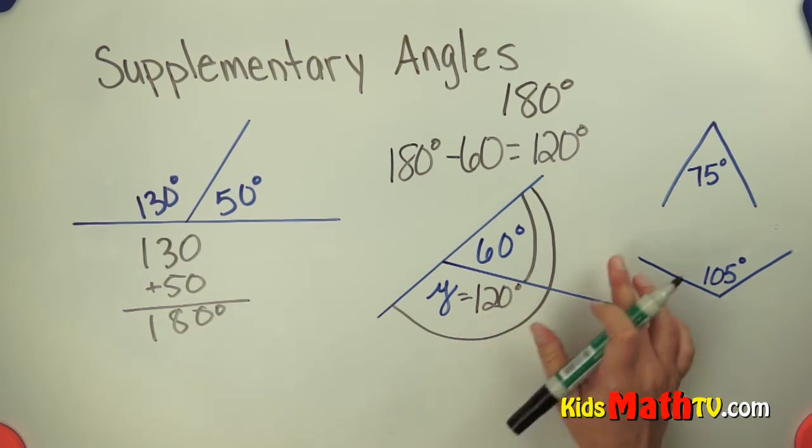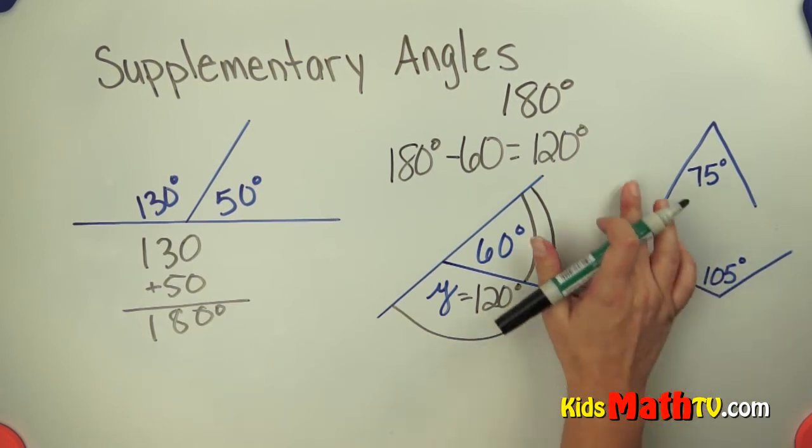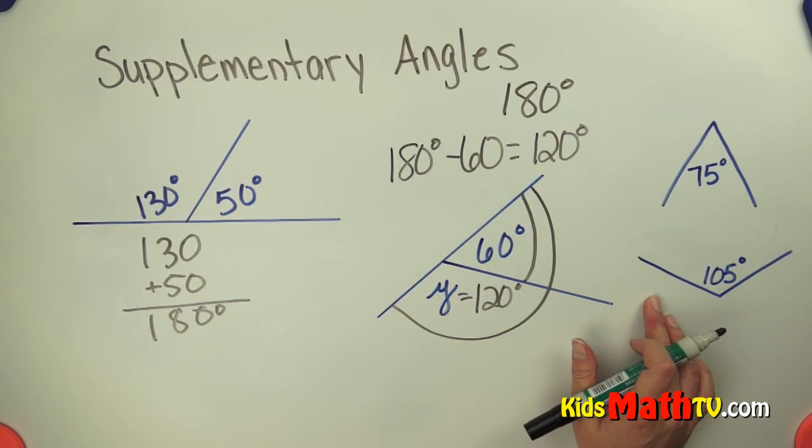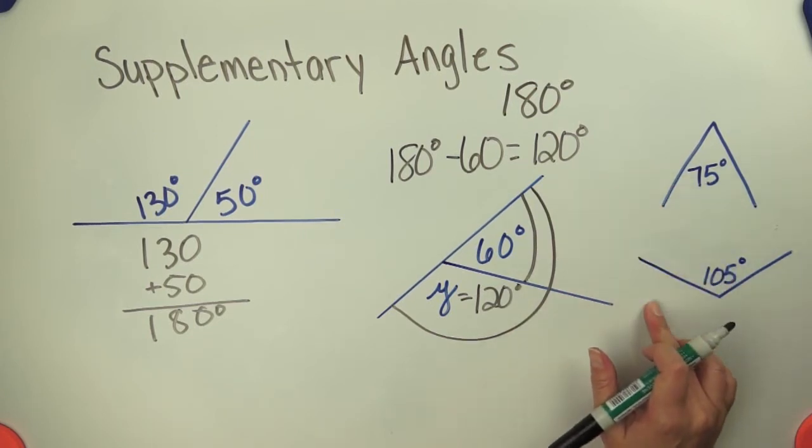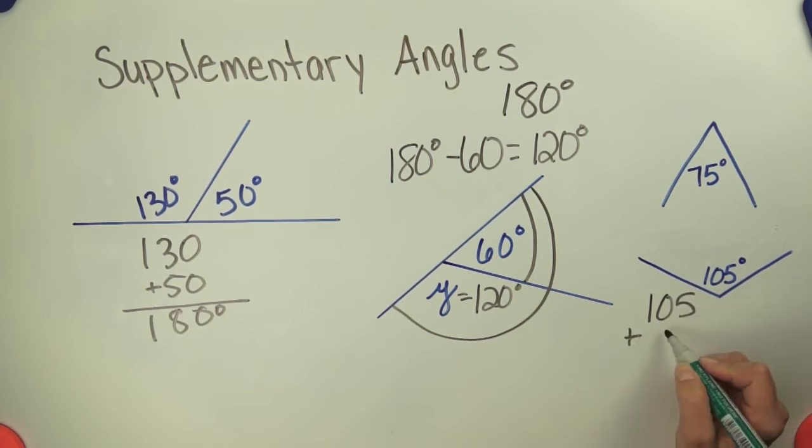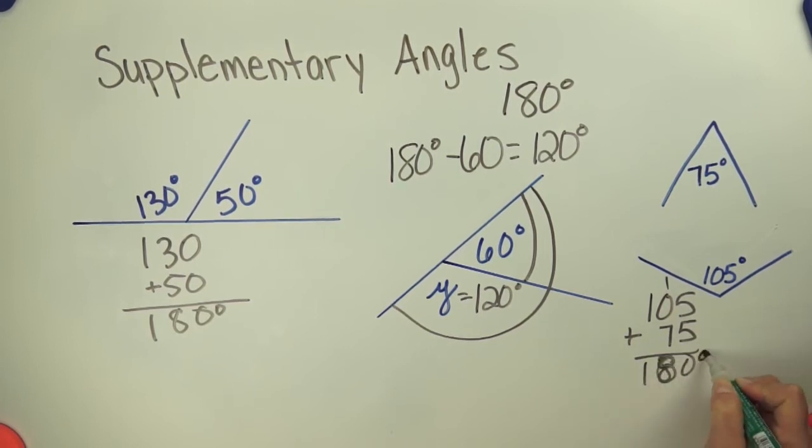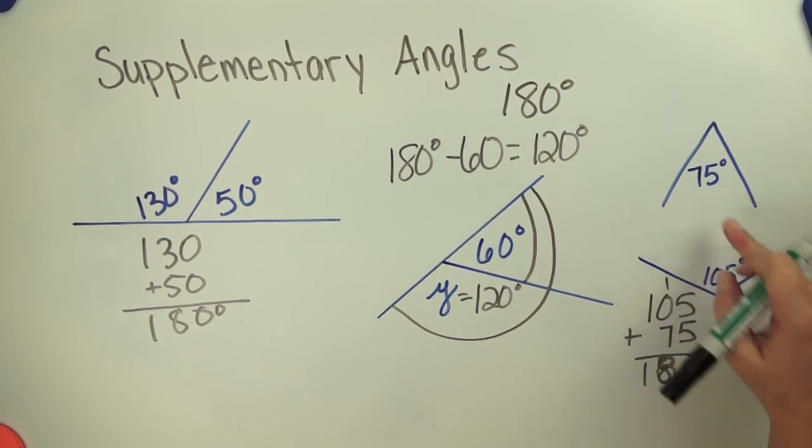Okay so let's see if these two are supplementary angles. Do they add to 180 degrees? So let's try it. 105 plus 75, we add those we do indeed get 180 degrees. So 75 degrees and 105 degrees are supplementary because they add to 180 degrees.